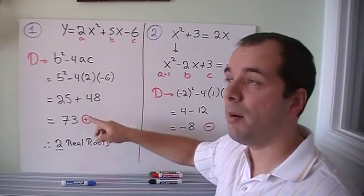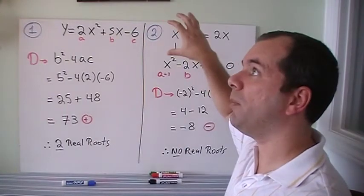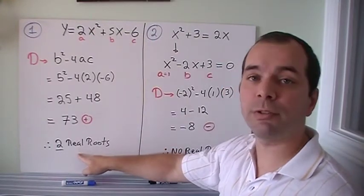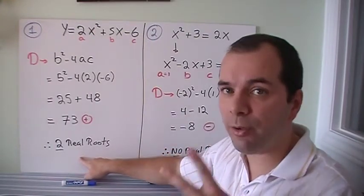73 is a positive number. Positive number means two positive answers because I'm going to add and subtract. And that means I have two real roots. I don't know what the roots are, but I know that there will be two of them.